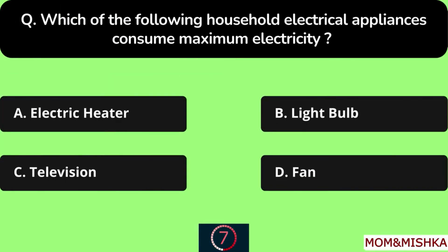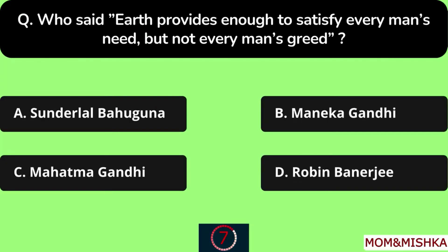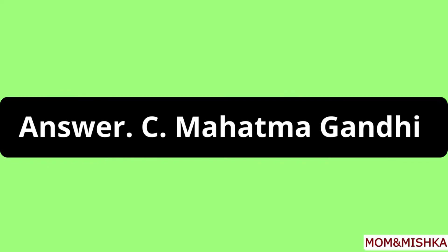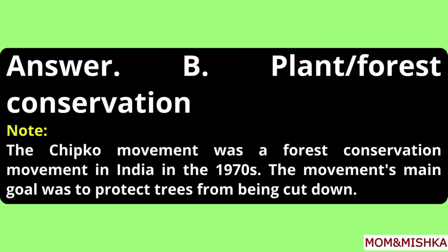Which of the following household electrical appliances consumes maximum electricity? Electric heater, Option A. Who said 'Earth provides enough to satisfy every man's need but not every man's greed'? Said by Mahatma Gandhi, Option C. Chipko movement is concerned with plant or forest conservation, Option B. This was a forest conservation movement in India in the 1970s and the main goal was to protect trees from being cut down.